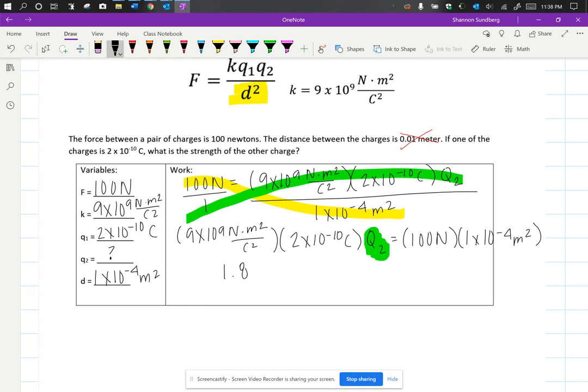And if you keep an eye on your units, you're going to see you're going to lose a coulomb. So this goes away, and this goes away. So you're going to have newtons times meters squared over a coulomb. And you have to pull down your Q2 here.